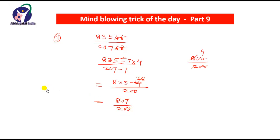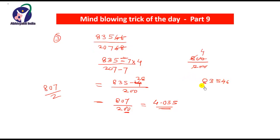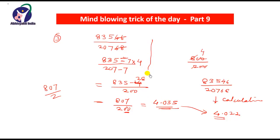Dividing by 200 is very easy — just divide 807 by 2 and put a decimal point after two digits because there are two zeros in the denominator. So 807 divided by 200 gives 4.035. Now using a calculator, 83,546 divided by 20,768 gives 4.022. So this is also very close. Approximately we can find the division of such big numbers within a few seconds using just subtraction or addition of smaller numbers.